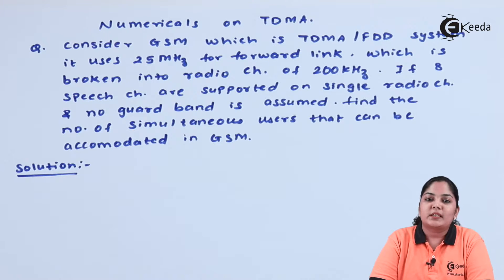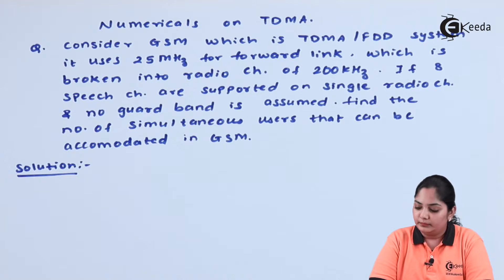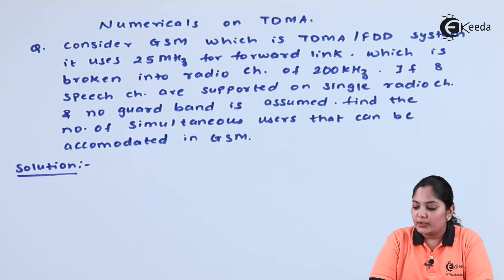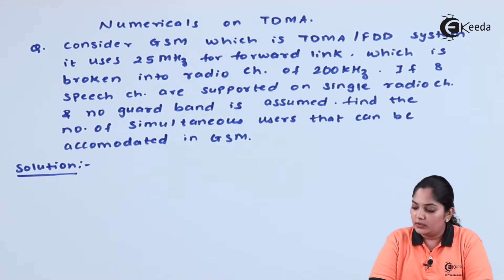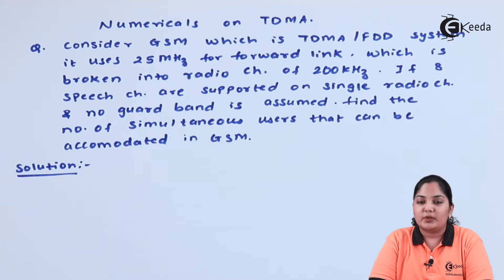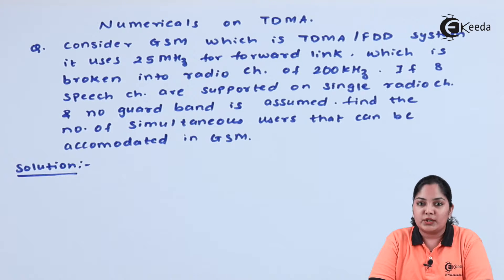Let us go to the next numerical on TDMA techniques. Consider a GSM, which is a TDMA FDD system. It uses 25 MHz for the forward link, broken into radio channels of 200 kHz. If 8 speech channels are supported on a single radio channel and no guard band is assumed, find the number of simultaneous users that can be accommodated in the GSM system.